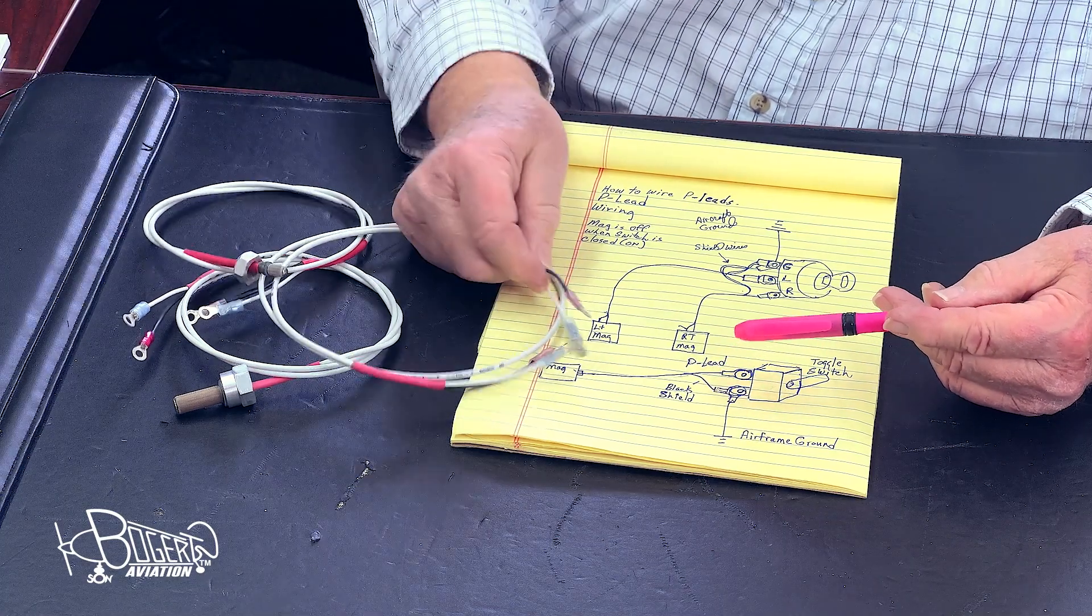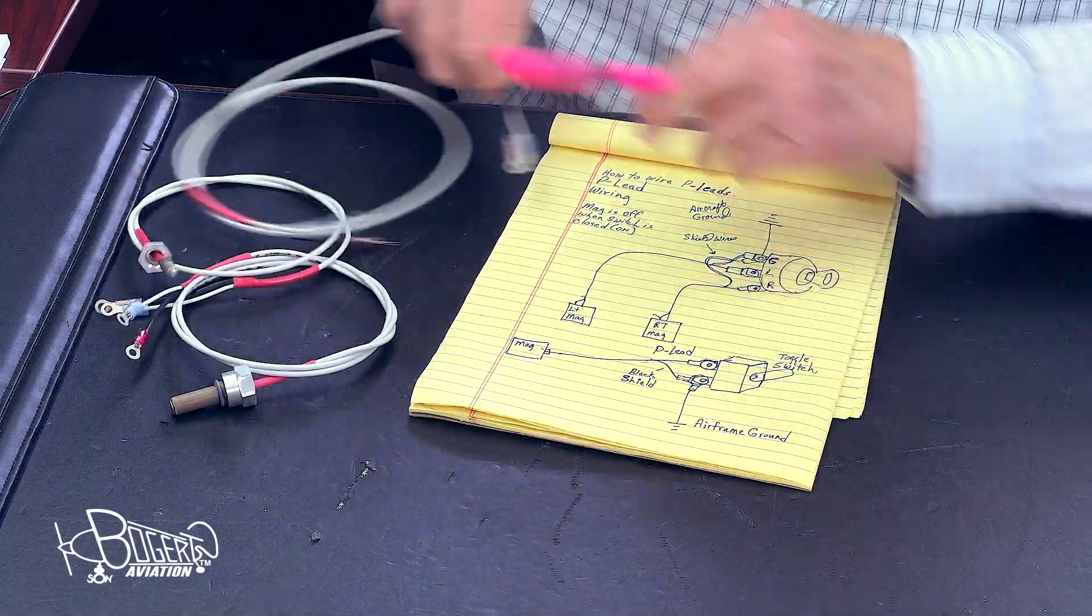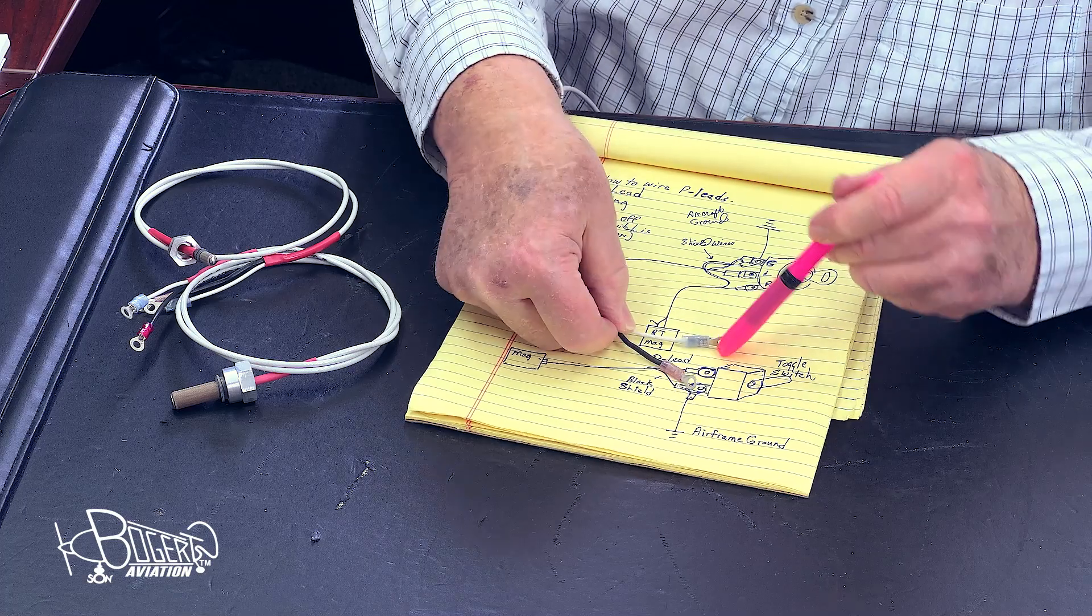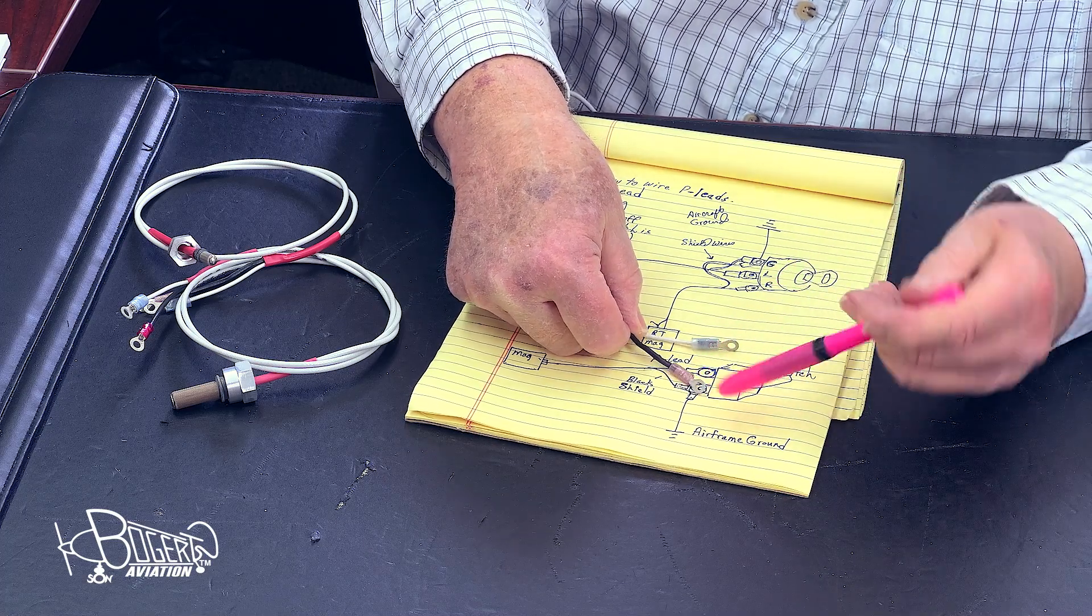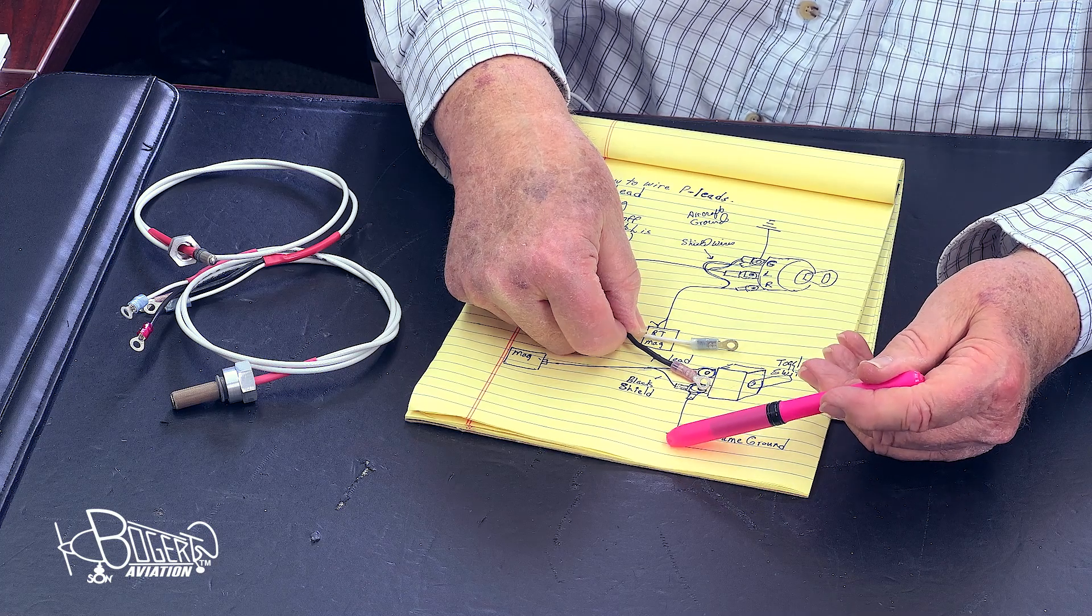The black lead of the P-lead is going to connect to the ground terminal of the switch. And a ground lead is going to come off of that switch and go to the airframe ground.